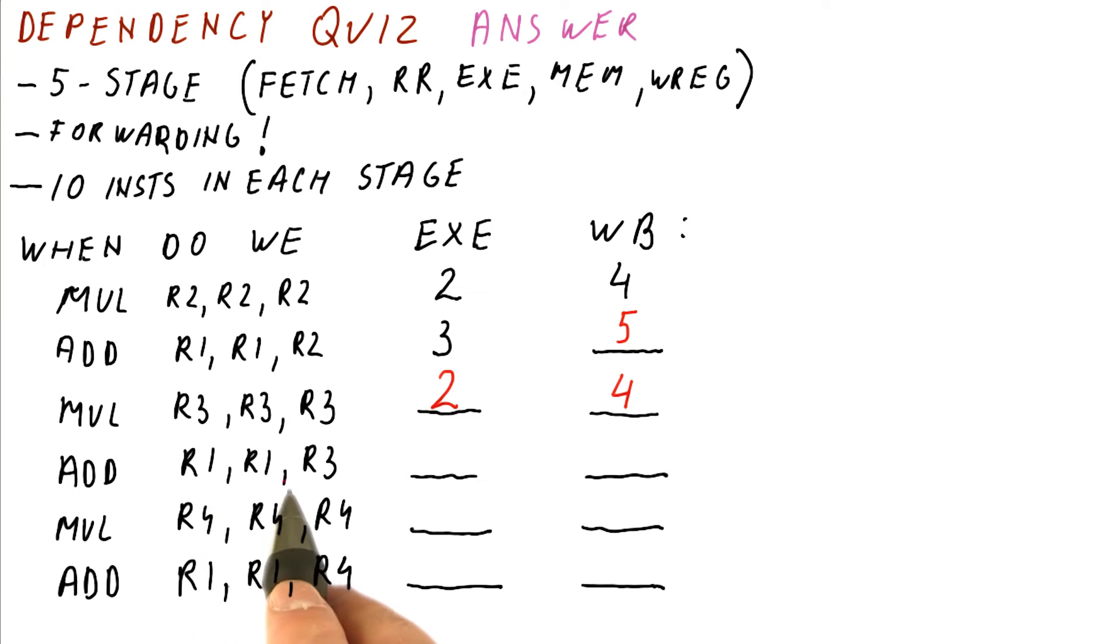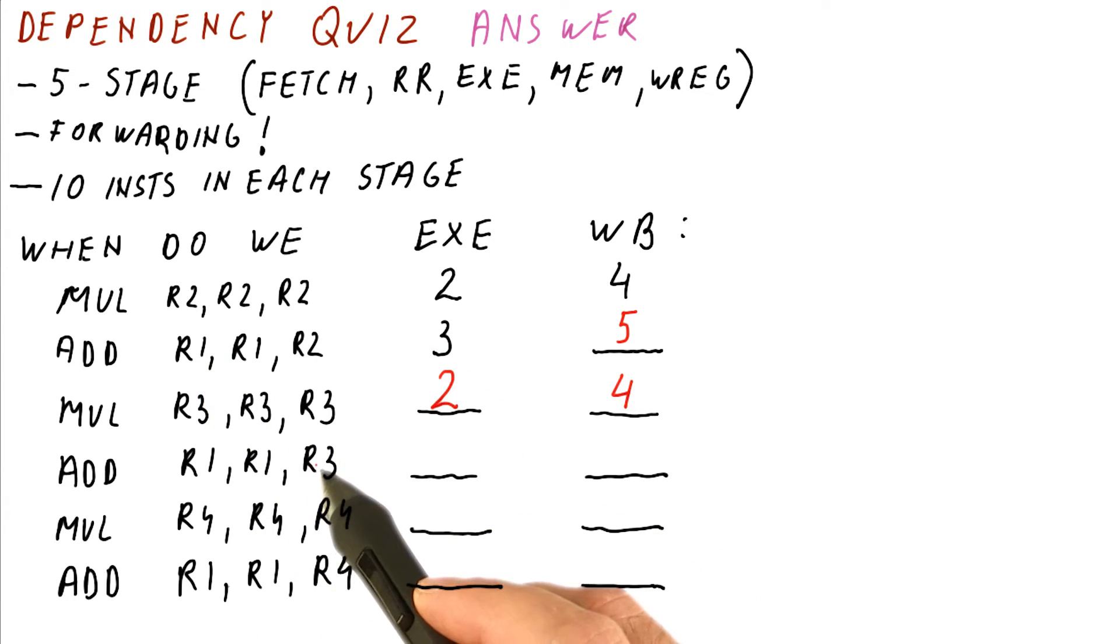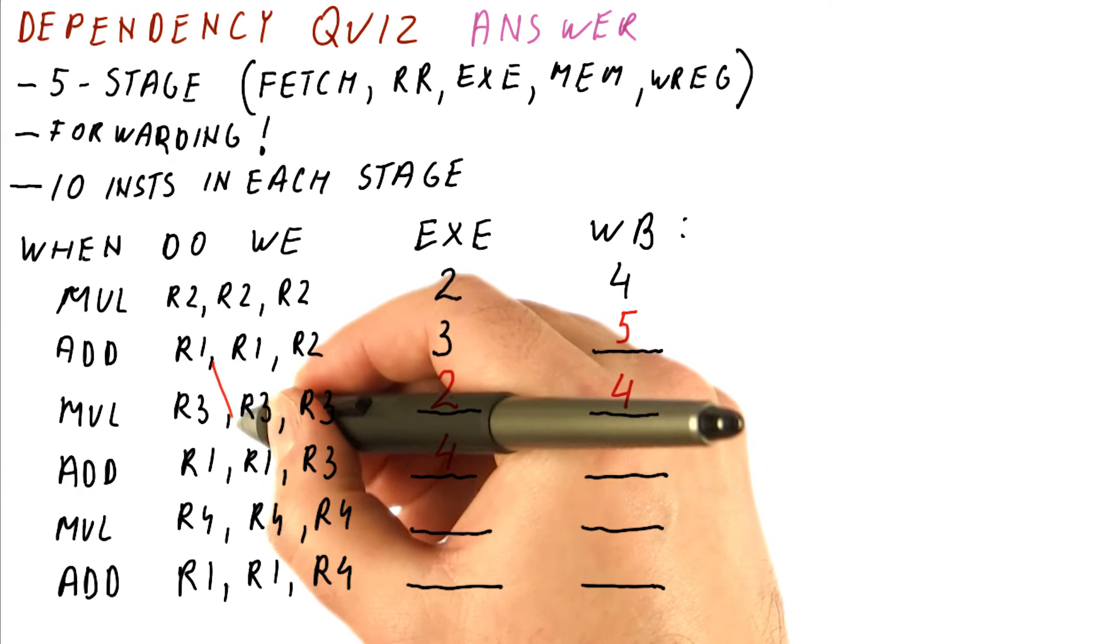Now let's look at this add here. It uses R1 and R3. The R1 it's supposed to be using is produced by this add, which executes in cycle three. The R3 is produced in cycle two by the multiplication. So this instruction actually has to wait for cycle four because of this.